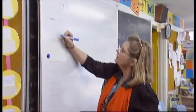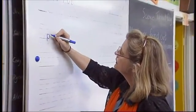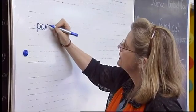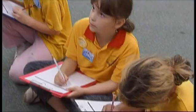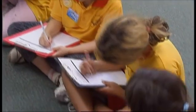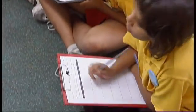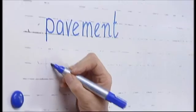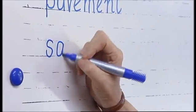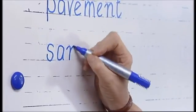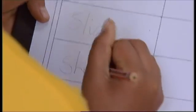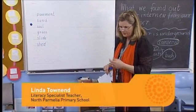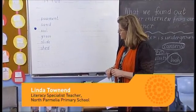We're looking at what happens when the water goes on some pavement around the school. You can write pavement on your water surface in that first column. We're looking at what happens when we put water on the sand. Does it stay there? Does it go somewhere? What does it look like? What does the sand look like? Same with the soil.